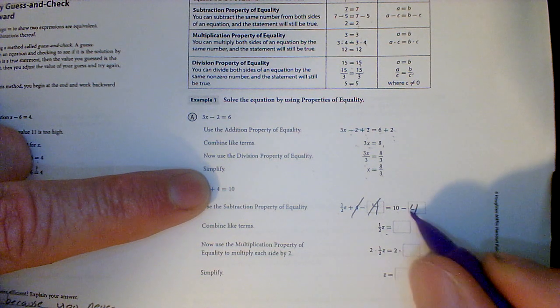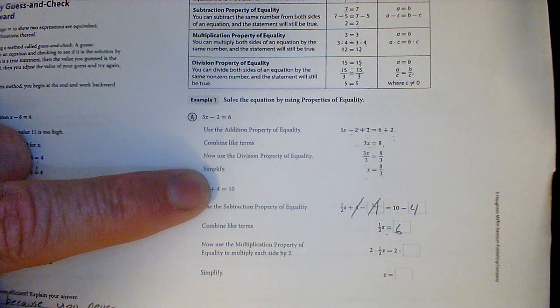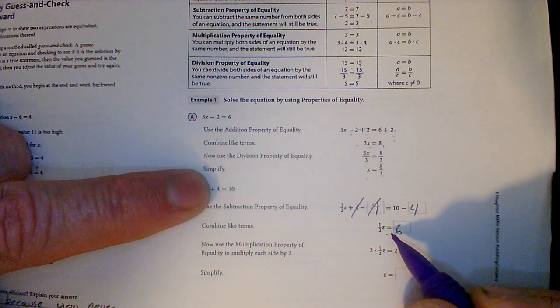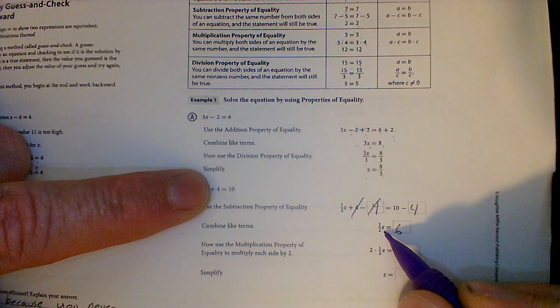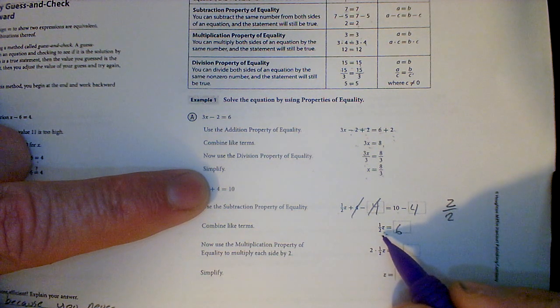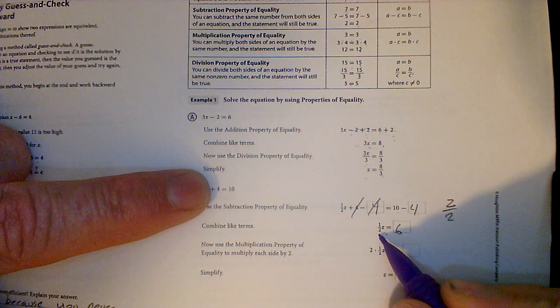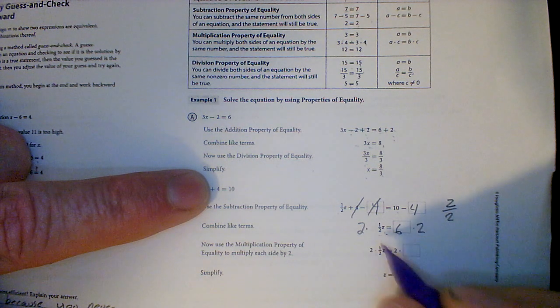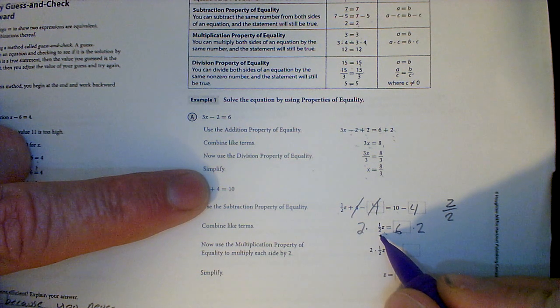And I have 1 half x equals 10 minus 4 is 6. Well, there's 1 half of, well, that's not x, that's z. You can write that like this. You could say z divided by 2. Well, what's the opposite? Well, there's two ways to think about it. Instead of dividing by 2, I can multiply both sides by 2. Or, you can multiply by the reciprocal.